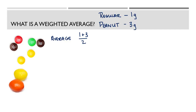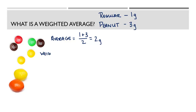So 1 plus 3 over 2 gives us an average of 2. But if we're looking at this particular set of M&Ms, it doesn't really seem fair that the average is 2 grams, because there are not equal numbers of both types. There are way more regular M&Ms than peanut M&Ms, so it doesn't make sense that this average would be 2 grams. What we are going to do is find a weighted average.